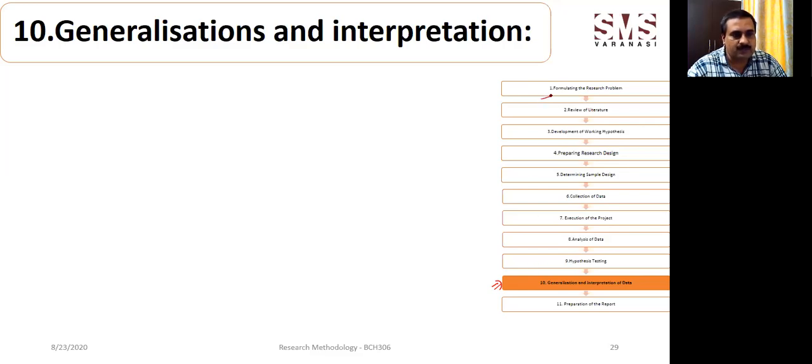We have already covered formulation of research problem, review of literature, development of working hypothesis, preparation of research design, determining sampling design, collection of data, execution of the project, analysis of data, and hypothesis testing. Now we are going to cover generalization and interpretation of the data.